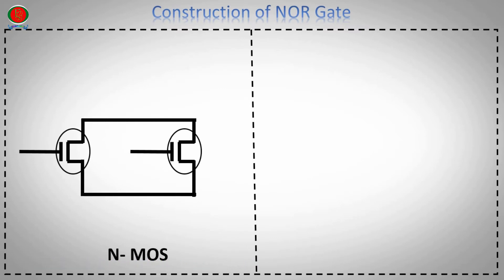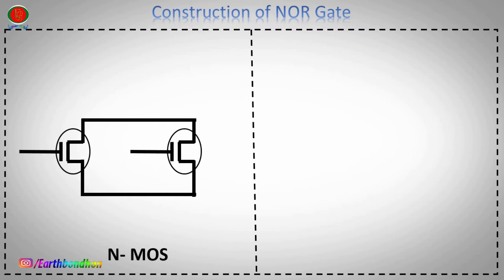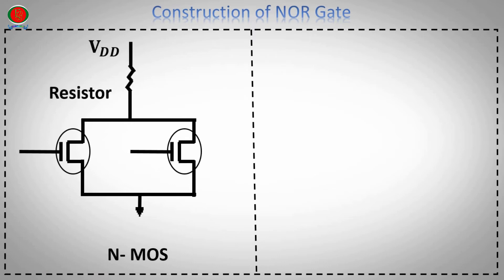The NMOS source terminal and NMOS drain terminal are shown. The transistor is connected to ground, with a load resistor and VDD power supply. The output is taken from VDD across the transistor.